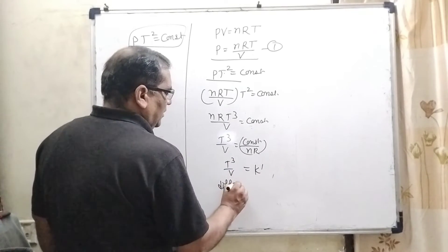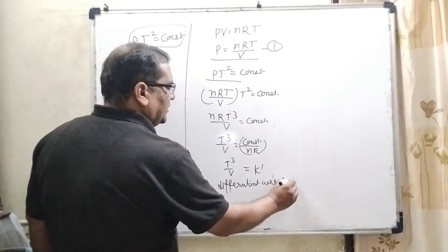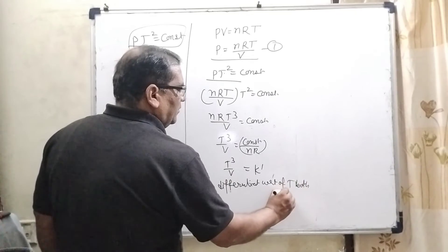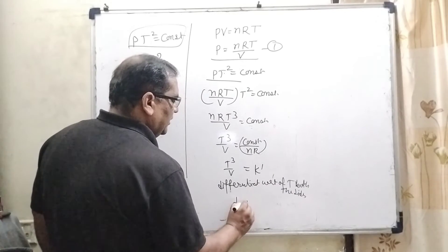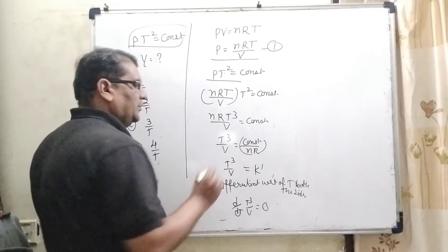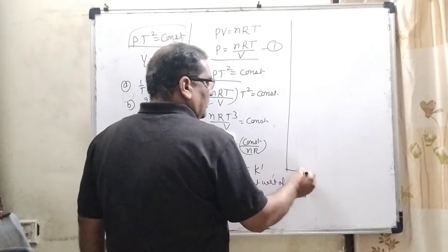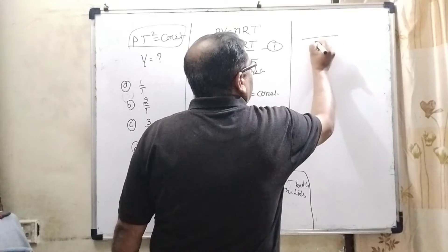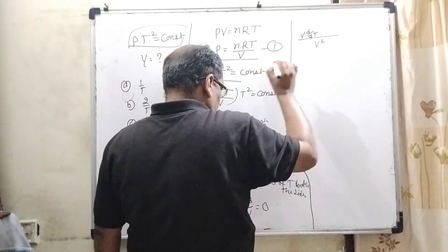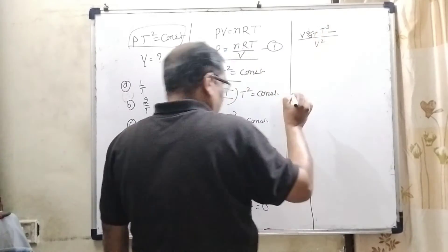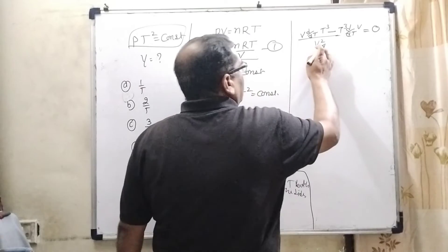Now differentiate with respect to capital T, both sides. So here d/dT of T³/V = 0. Differentiation of constant is 0. Now here we are using the quotient rule of differentiation. V² in denominator, V as it is d/dT of T³ minus T³ as it is d/dT of V equals 0.